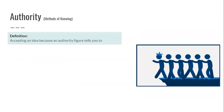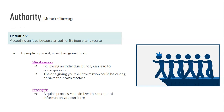Moving on, the next method is authority — accepting an idea because an authority figure tells you to. Examples include a parent, a teacher, a government, or social media influencers. The weakness, quite obviously, is that following someone blindly just because they hold authority, regardless of how much you look up to them, can lead to consequences. There's a good image of an authority figure leading a group of people right off a cliff — if you're following without understanding why, you may make decisions that aren't the best for you. Additionally, the person giving you information could simply be wrong.